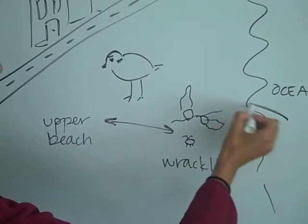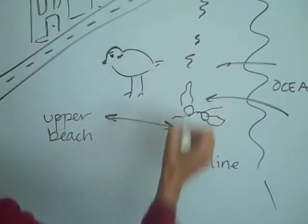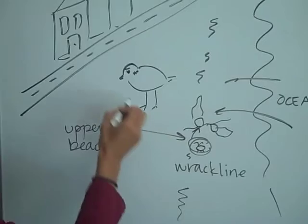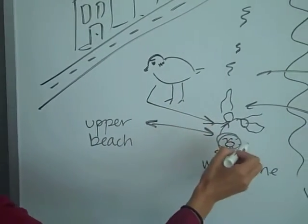So, the ocean spits up the kelp here, so it's all along this rack line. And these are the decomposers of the system, so they're eating kelp, and the plover's actually the predator, so it's eating all these little decomposers.